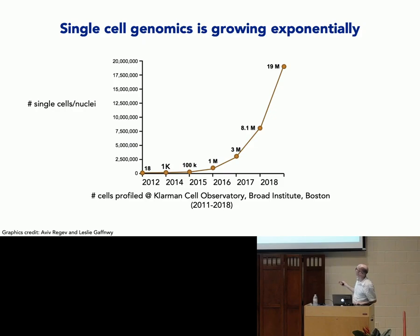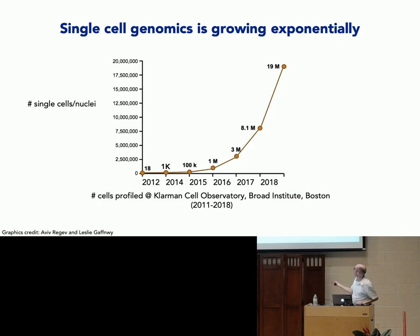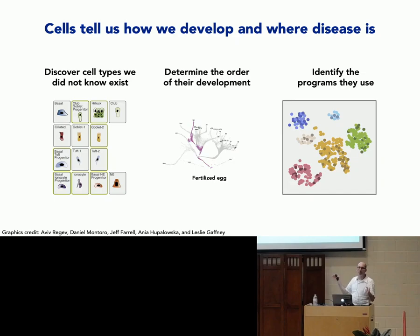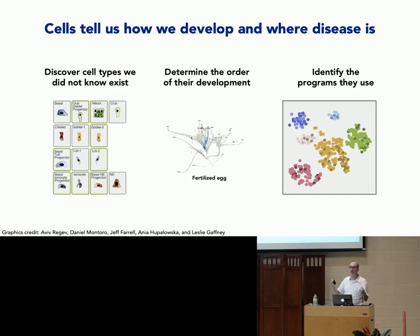Single cell genomics data is growing exponentially right now. These are numbers from the Broad Institute in Boston — what they call the Klarman Cell Observatory. They decided to take this idea from astronomy, where we have telescopes and observatories to measure as much information as we can from the stars, and they wanted to do the same thing with cells. They've measured millions and millions of cells. We can now discover cell types that we didn't know existed — the last time this mostly happened was in the 1800s. We can also understand how cells are related to each other through development from a fertilized egg.